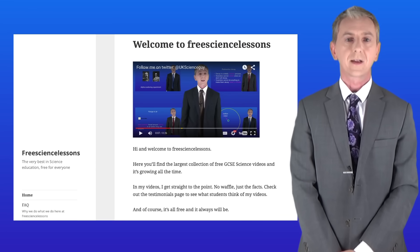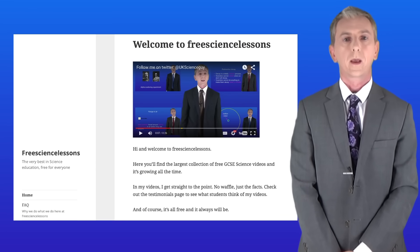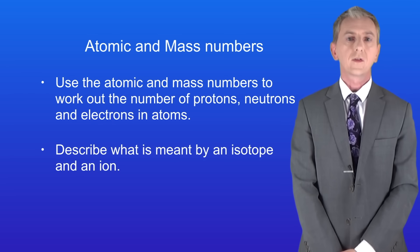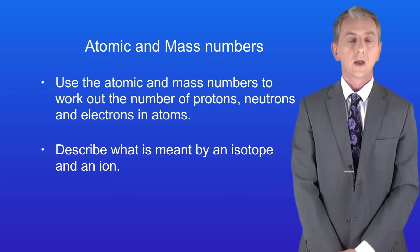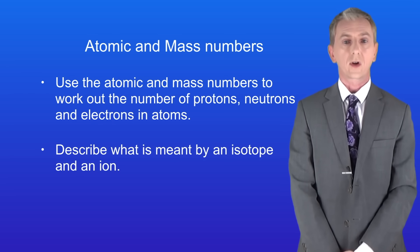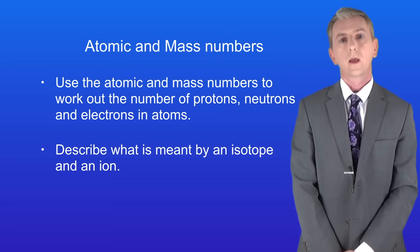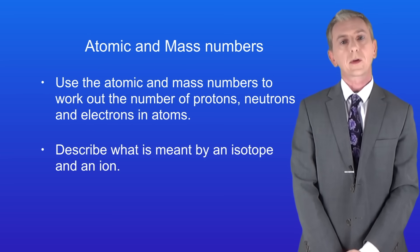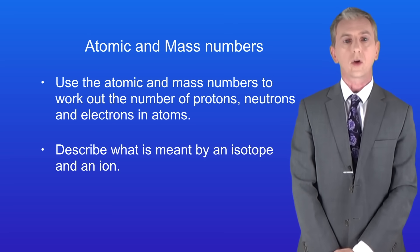Hi and welcome back to freesciencelessons.co.uk. By the end of this video you should be able to use the atomic and the mass numbers to work out the number of protons, neutrons and electrons in atoms. You should then be able to describe what's meant by an isotope and an ion.